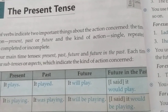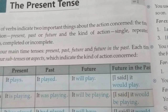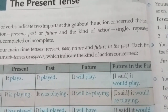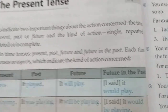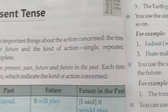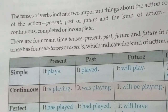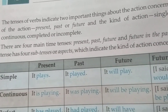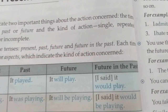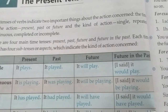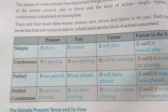Your tense is three types: present, past, and future. Each tense has four aspects: present indefinite, present continuous, present perfect, and present perfect continuous. In each tense, there are four sharp aspects which indicate the kinds of actions concerned.